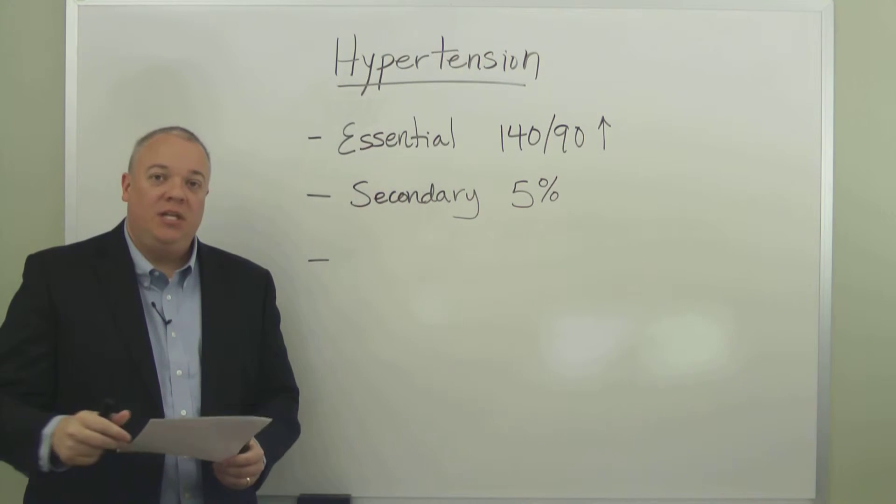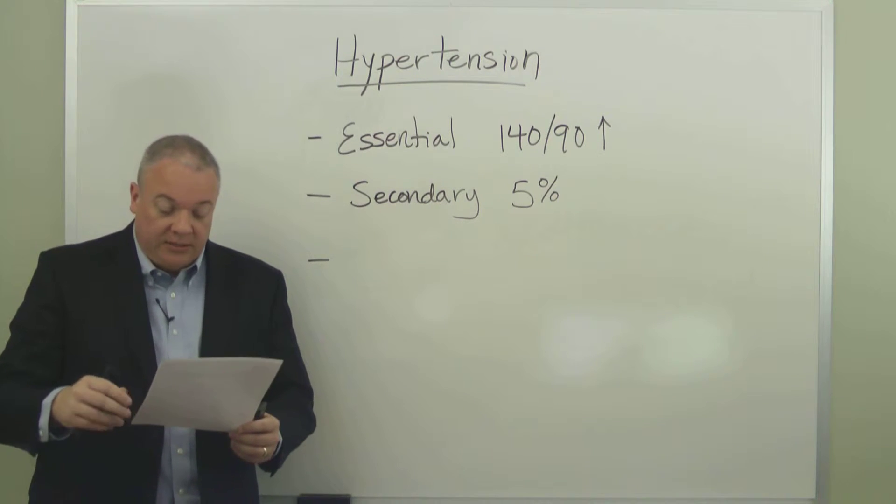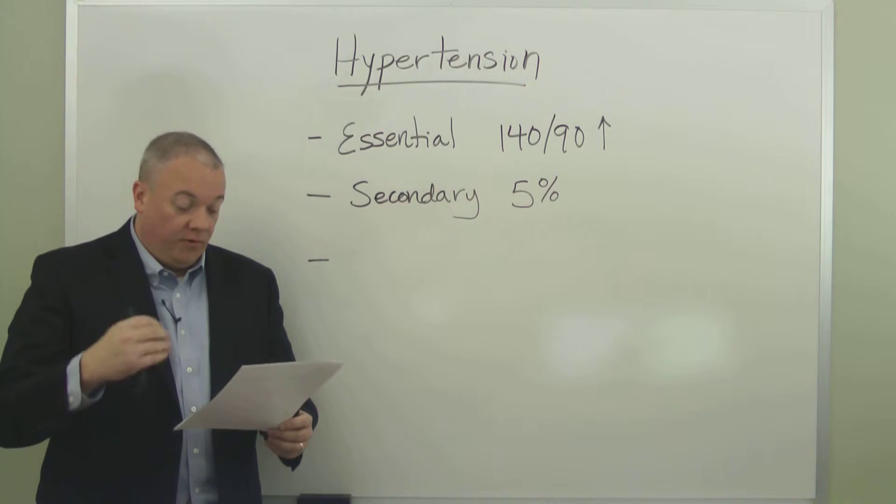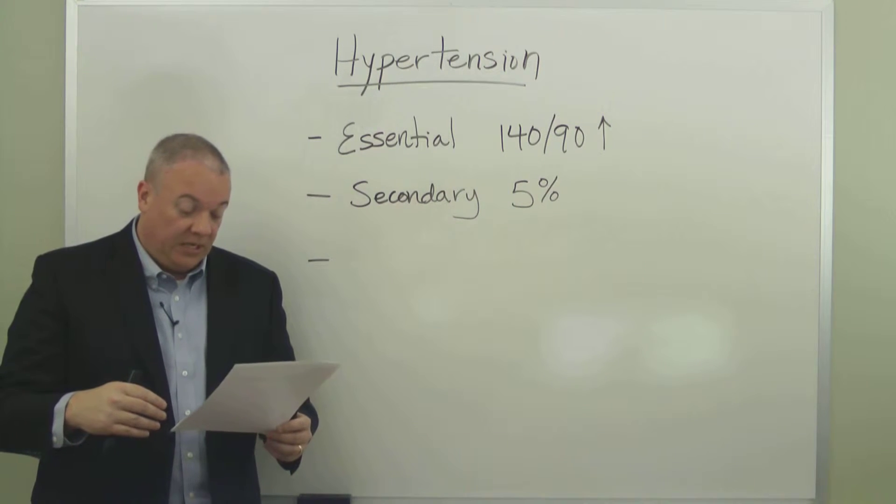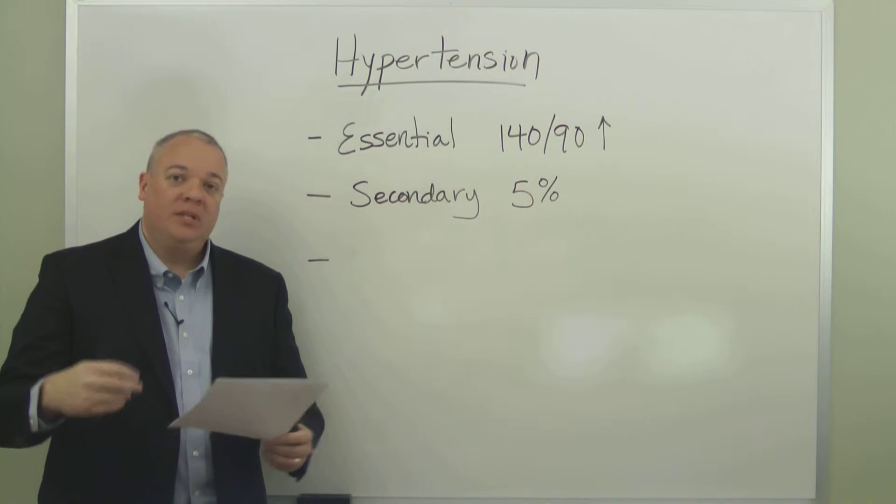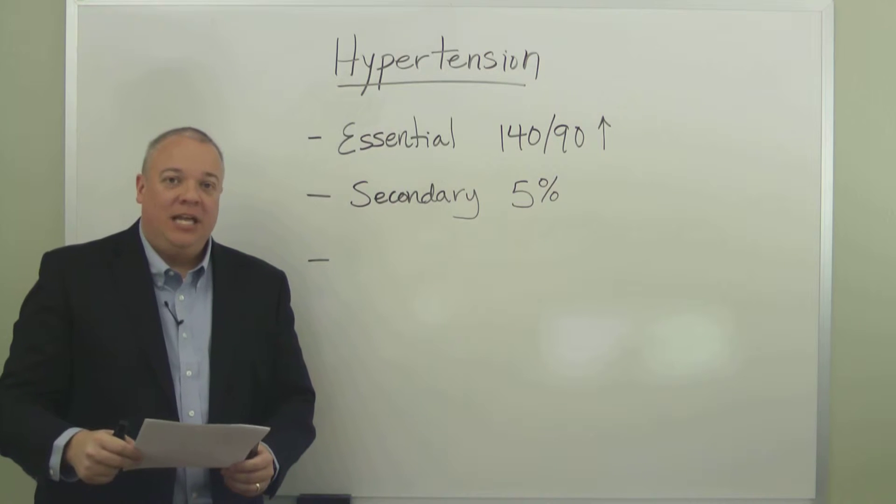Once they've been diagnosed with it, the secondary form of hypertension is usually due to some other medical condition, such as renal disease, renal artery stenosis, aldosteronism, and pheochromocytoma. These are the sorts of things that would lead to secondary hypertension.